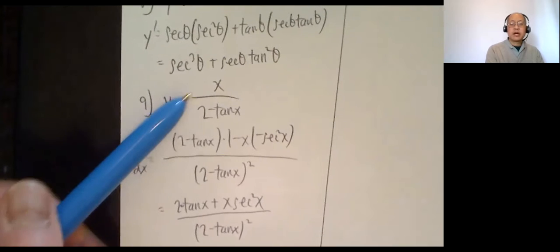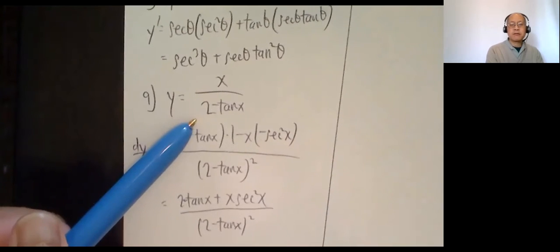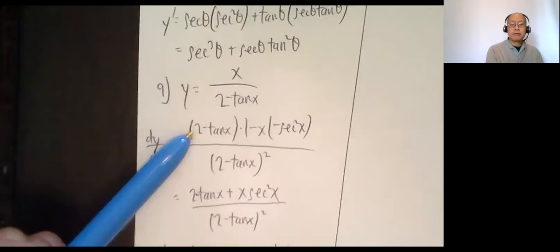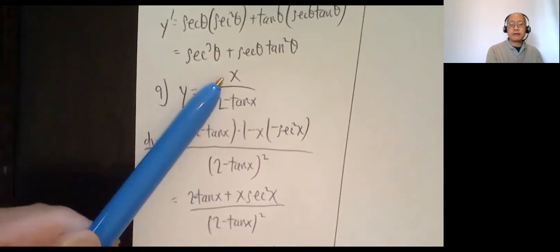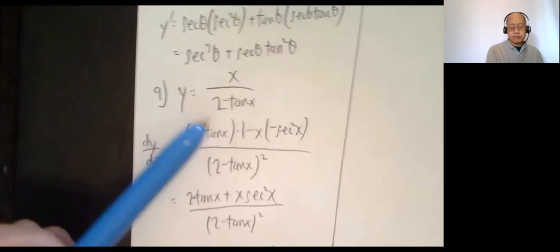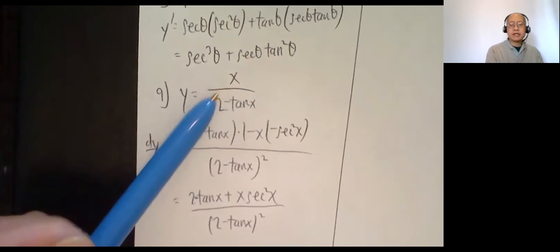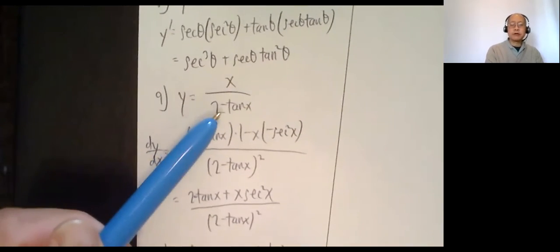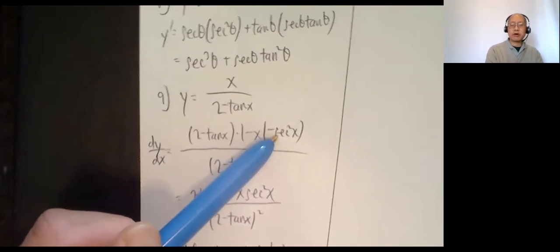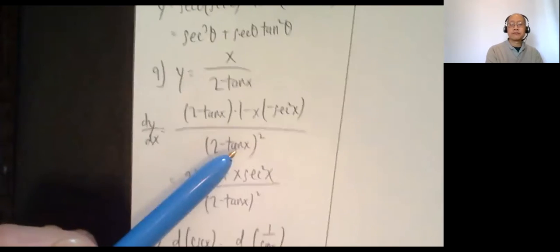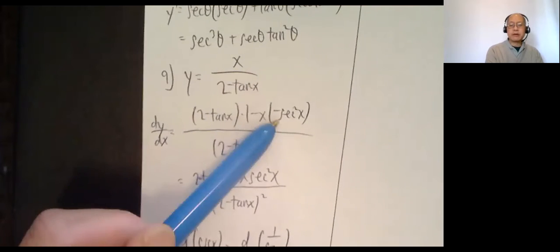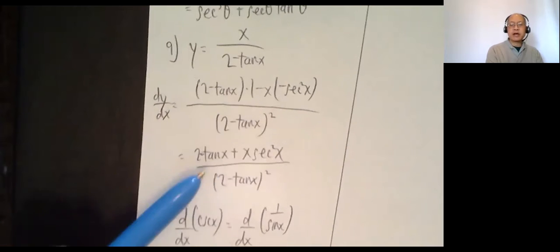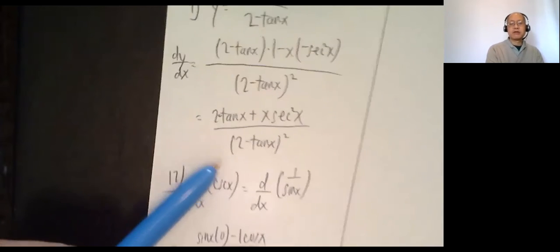Number nine: y equals x over (2 minus tan x) — quotient rule. dy/dx equals bottom times derivative of the top — derivative of x is 1 — minus the top x times the derivative of the bottom. Derivative of (2 minus tan x): derivative of 2 is 0, derivative of negative tan x is negative secant squared x, giving a double negative. Final answer: (2 minus tan x plus x secant squared x) over (2 minus tan x) squared.